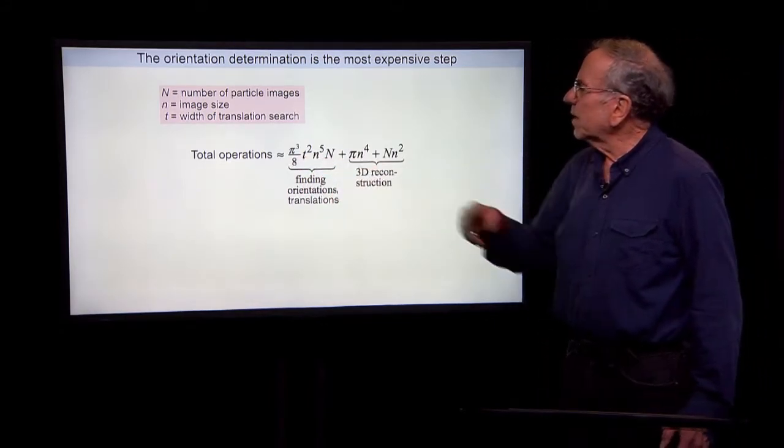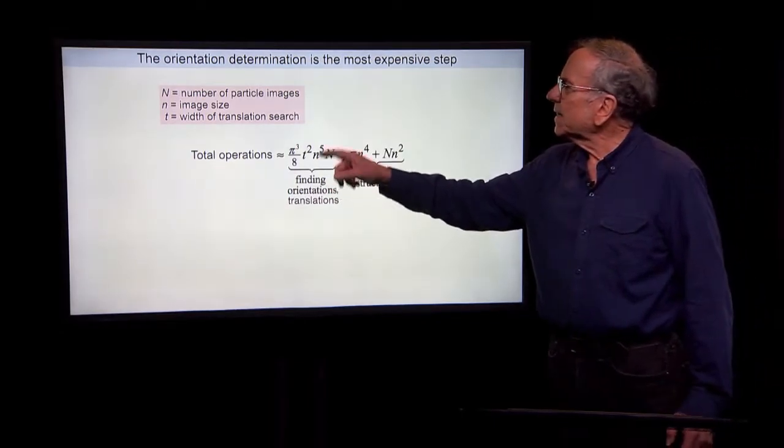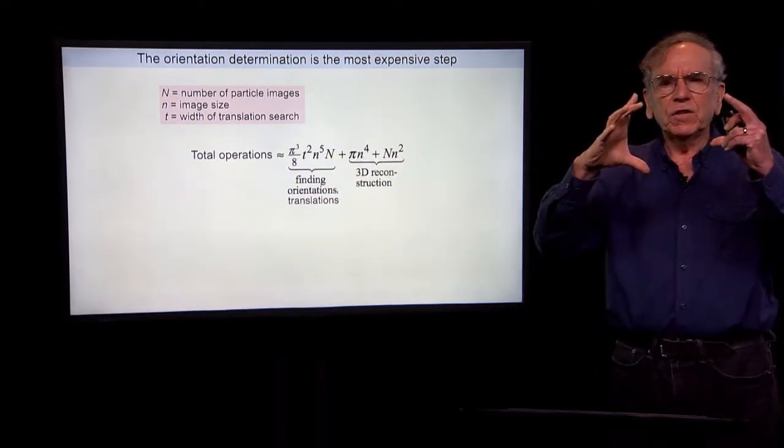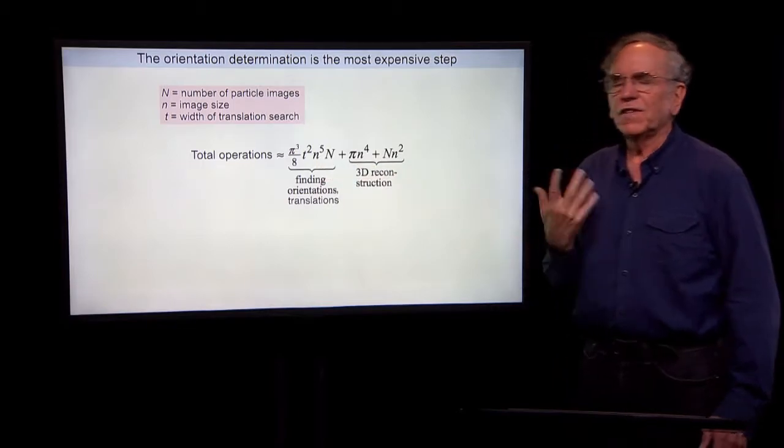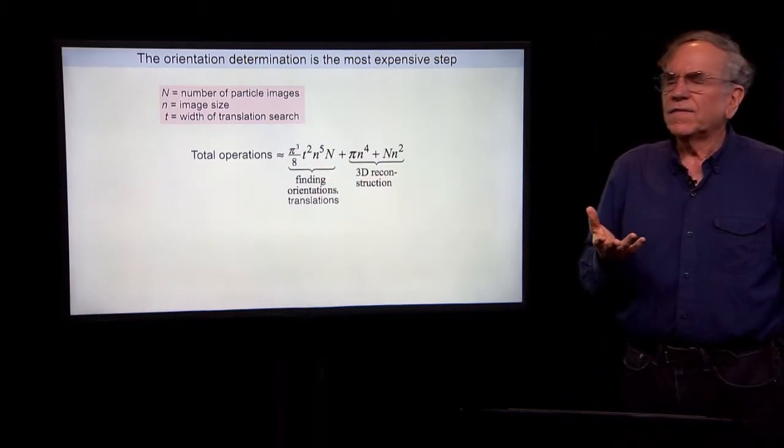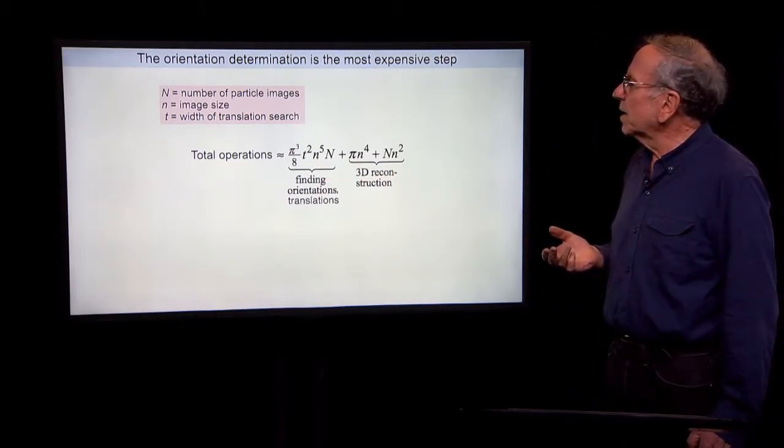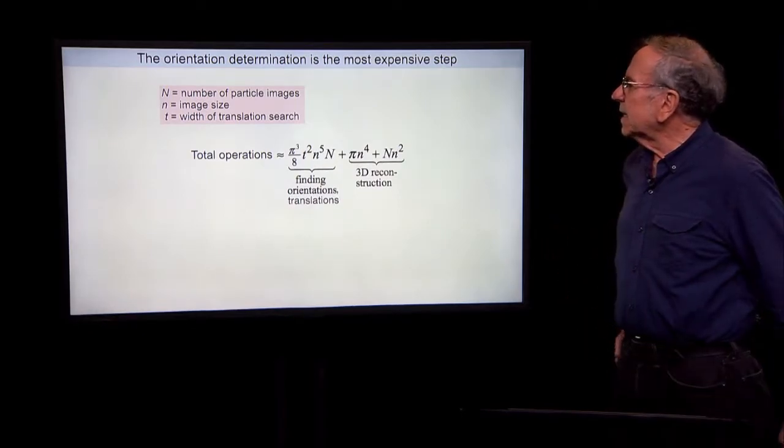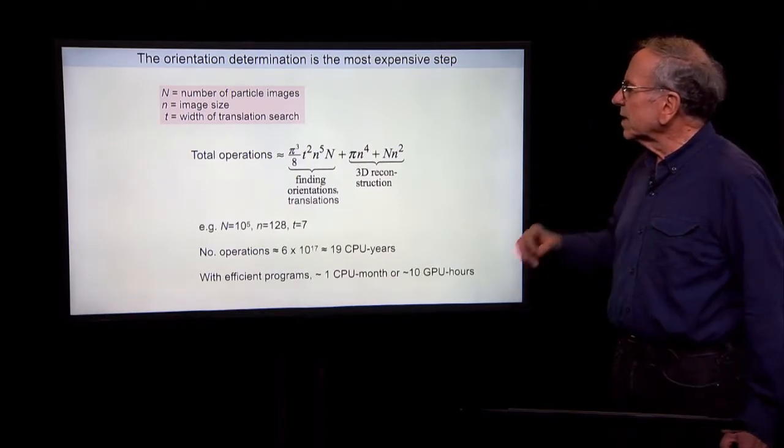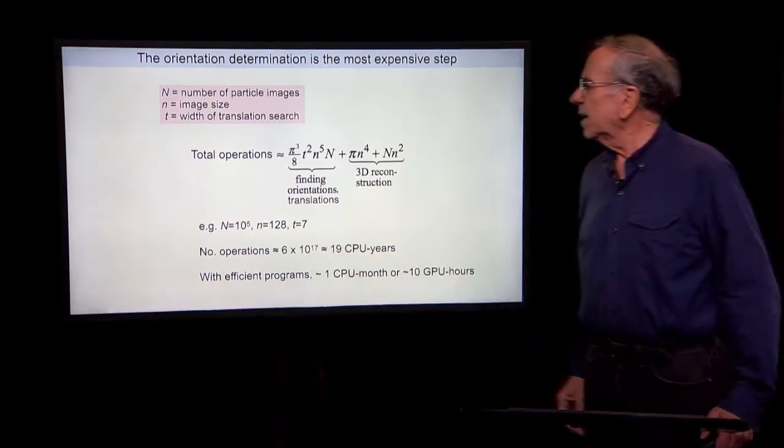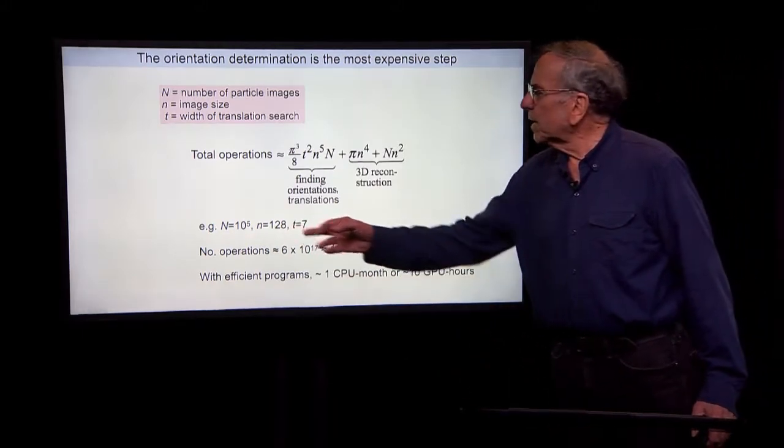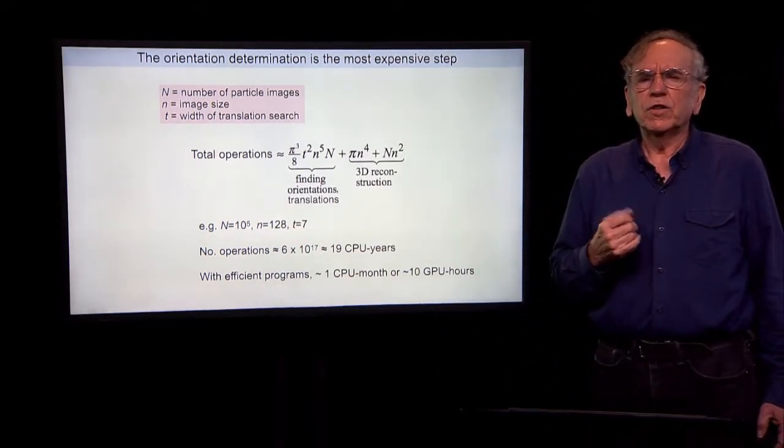And so you can see the total number of operations depends here with the fifth power of the size of the image that we're using. That is roughly the fifth power of the resolution that we're working with. And it's extremely computationally expensive.